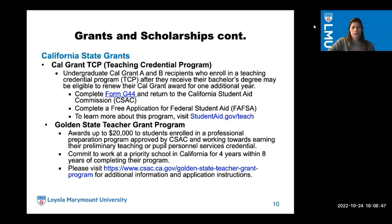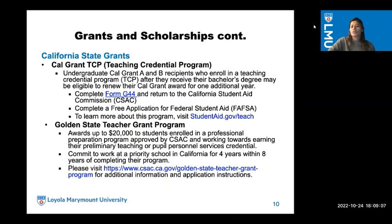Another program I oversee is the Golden State Teacher Grant program. The award is up to $20,000 for students enrolled in a professional preparation program approved by CSAC and working towards earning their preliminary teaching credential or pupil personnel service credential. For more information and application instructions, visit csac.california.gov — Golden State Teacher Grant.